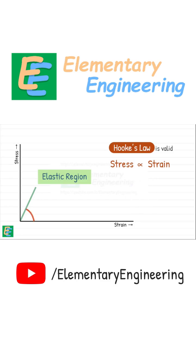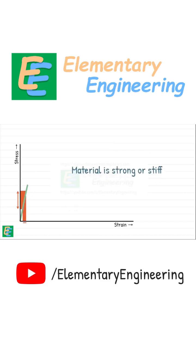The slope of this line gives us the modulus of elasticity, or Young's modulus. If the slope is higher—meaning it's steeper—we get a higher value of Young's modulus. A steeper line shows that even a large increase in stress results in only a small amount of strain. This tells us the material is strong or stiff. It resists deformation strongly in the elastic region.